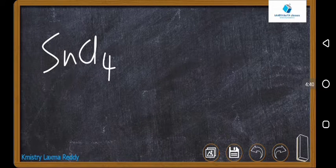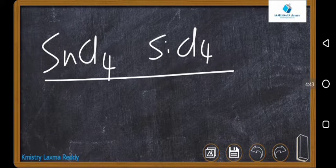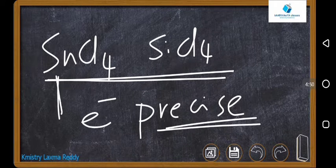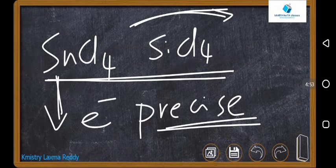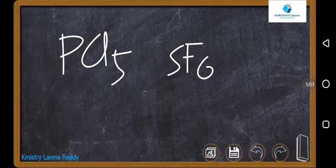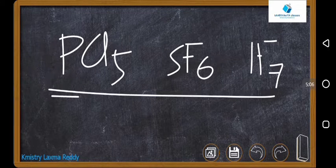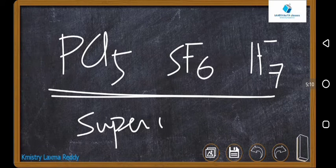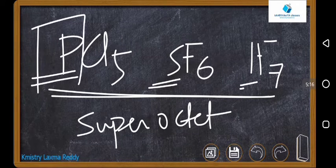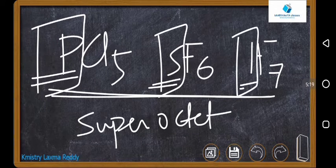Examples include SnCl4 and SiCl4, which are electron-precise — having exactly 8 electrons. But tin and silicon have vacant d-orbitals, so they can accept electrons and act as electrophiles. PCl5, SF6, and IF7 have more than 8 electrons — these are called superoctates. Still, phosphorus, sulfur, and iodine have vacant d-orbitals in these compounds, so you can consider them as electrophiles too.